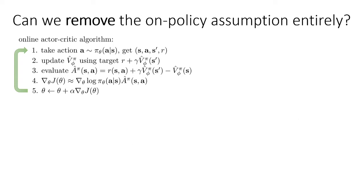This might get us thinking about another question. In the asynchronous actor-critic algorithm, the whole point was that we could use transitions generated by slightly older actors. If we can somehow get away with using transitions generated by much older actors, then maybe we don't even need multiple threads. Maybe we could use older transitions from the same actor — basically, use a history and load in transitions from that history without bothering with multiple threads. And that's the principle behind off-policy actor-critic.